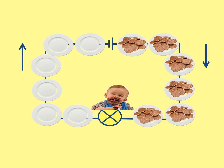First I'd like to recap the model we looked at last lesson. There are loads of different models — this one was about plates going around a conveyor belt round and round in circles. As the plates went through, they picked up some digestive biscuits, carried on round the circuit, passed through a little baby who ate the biscuits, and then the plates carried on empty until they picked up more biscuits. This model is exactly the same as how electricity works.